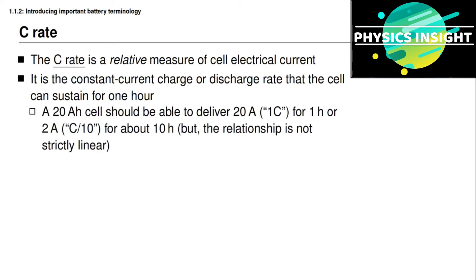For example, a cell having a capacity of 20 ampere-hours should be able to deliver 20 amperes for one hour, or 2 amperes for 10 hours. This relationship is not completely linear but is a good approximation. When we say the cell delivers 20 amperes for one hour, we are saying the C-rate of a 20 ampere-hour cell is 20 amperes — that is the 1C rate. The 2-ampere rate would be called the C/10 rate because it is one-tenth of the 1C rate.